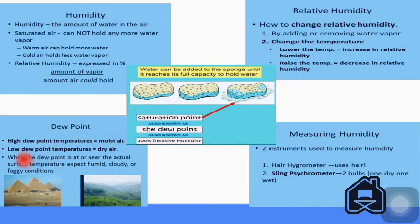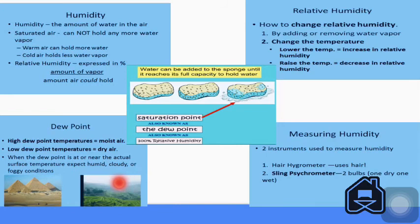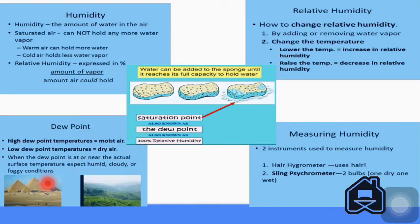Now see what is the dew point. High dew point temperature equals moist air, like in this figure in the valleys and lowlands. Low dew point temperature equals dry air, like in desert areas or where there is no vegetation, because there is no transpiration from the trees. Trees release water vapor and that is called transpiration.